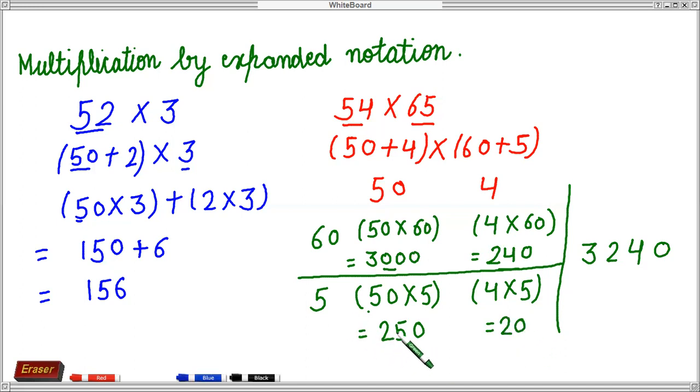So again, this was 50 plus 4. So whatever the product is coming in this line, we have to add it. So 250 plus 20, it will be 270.